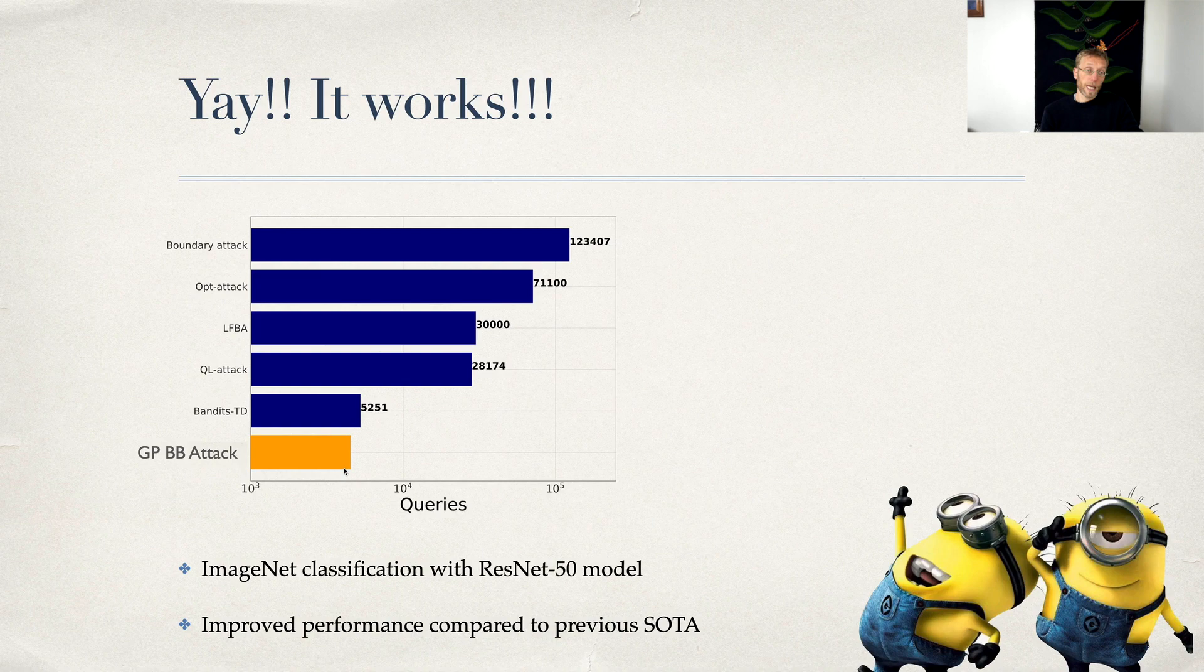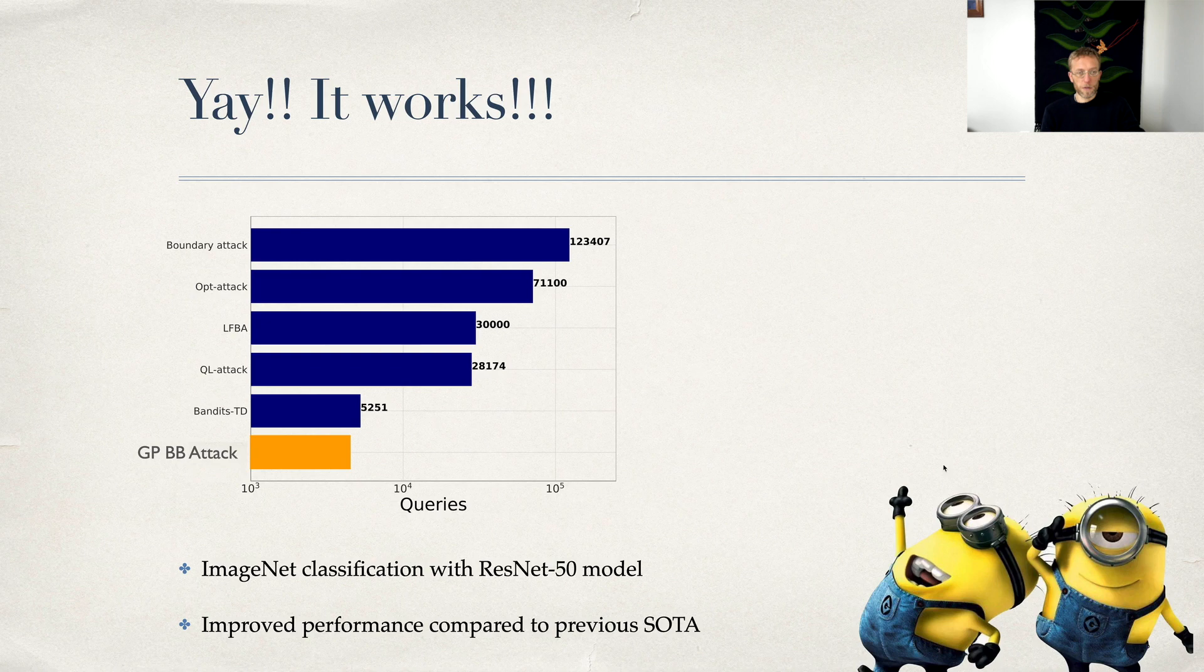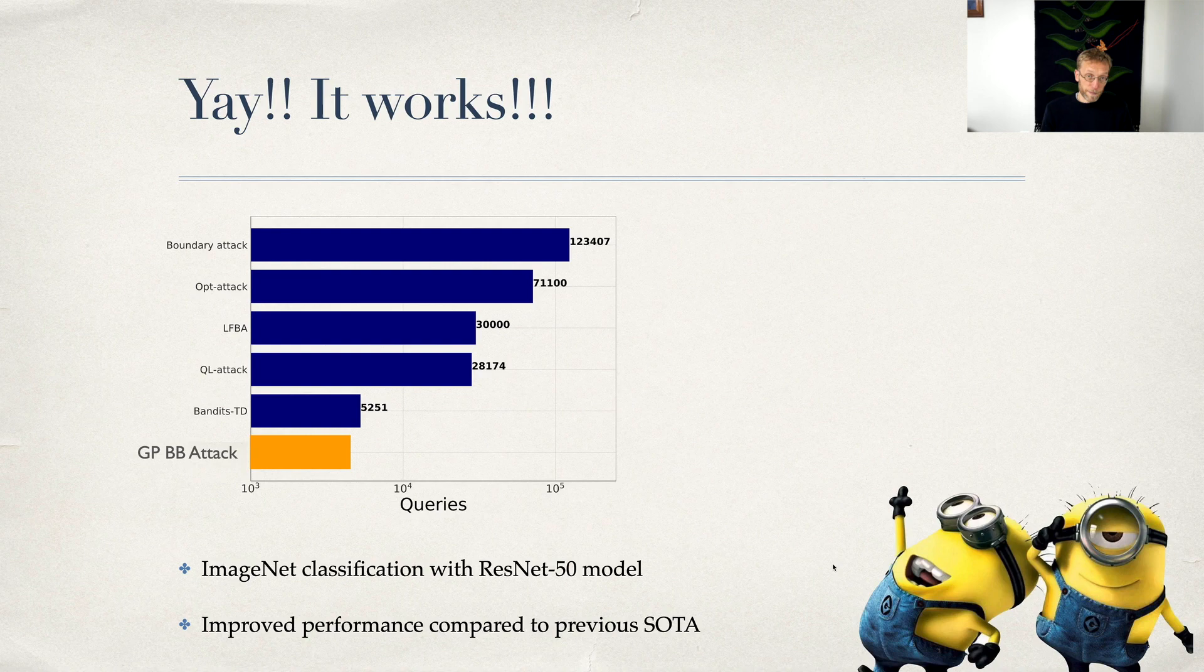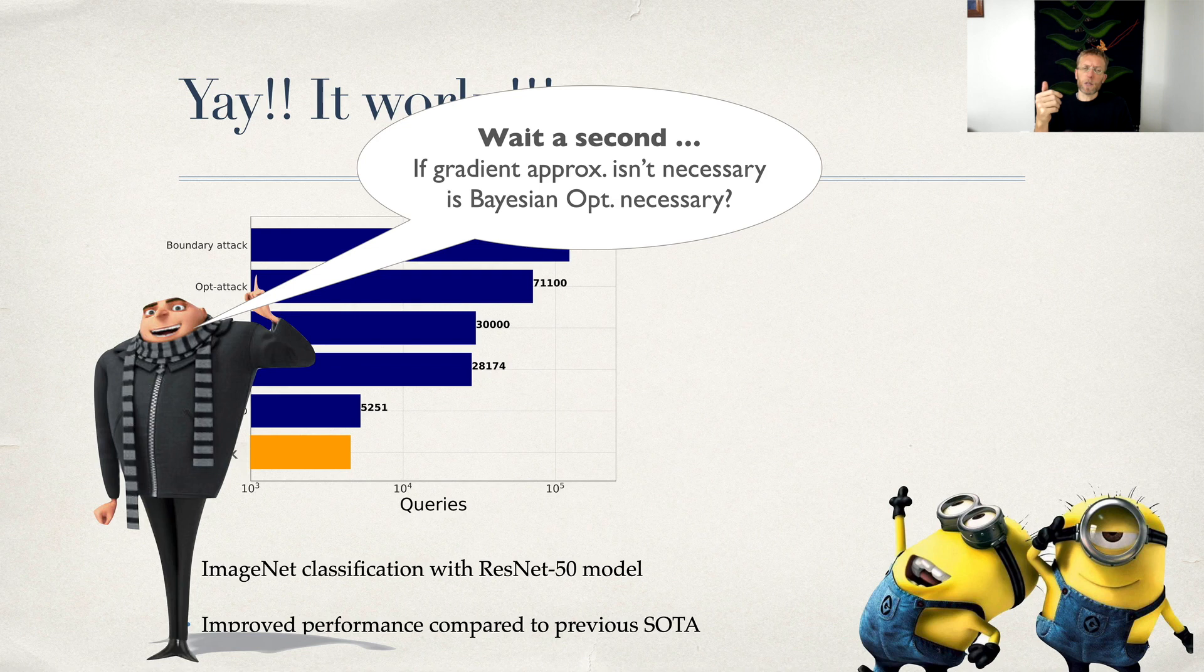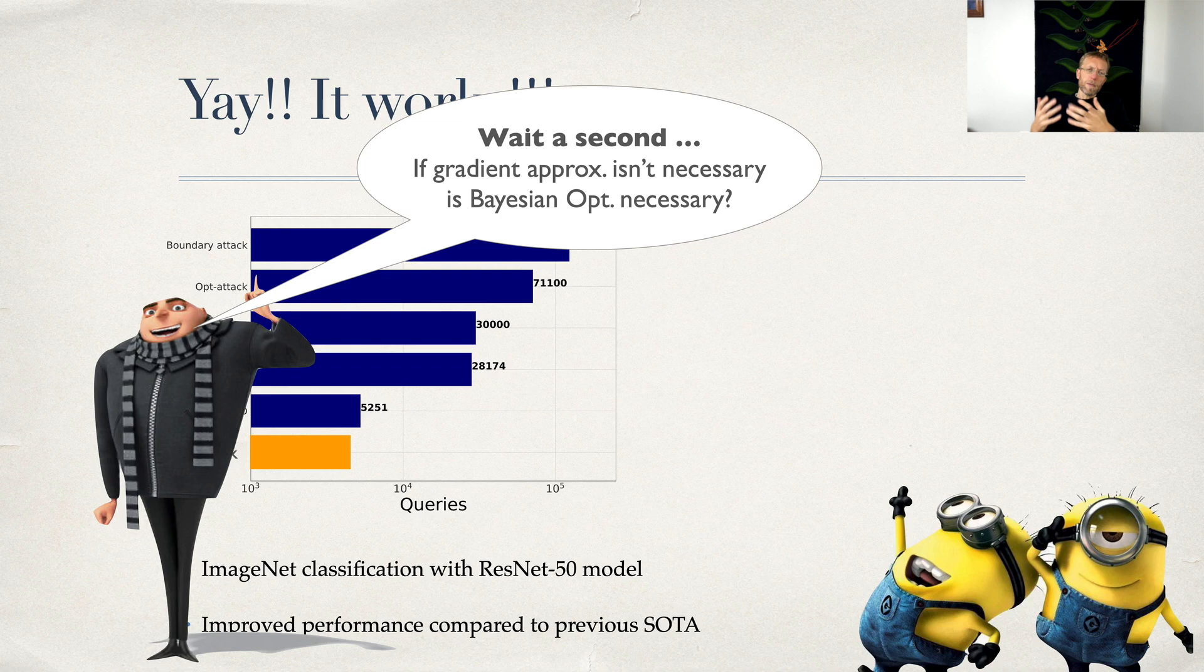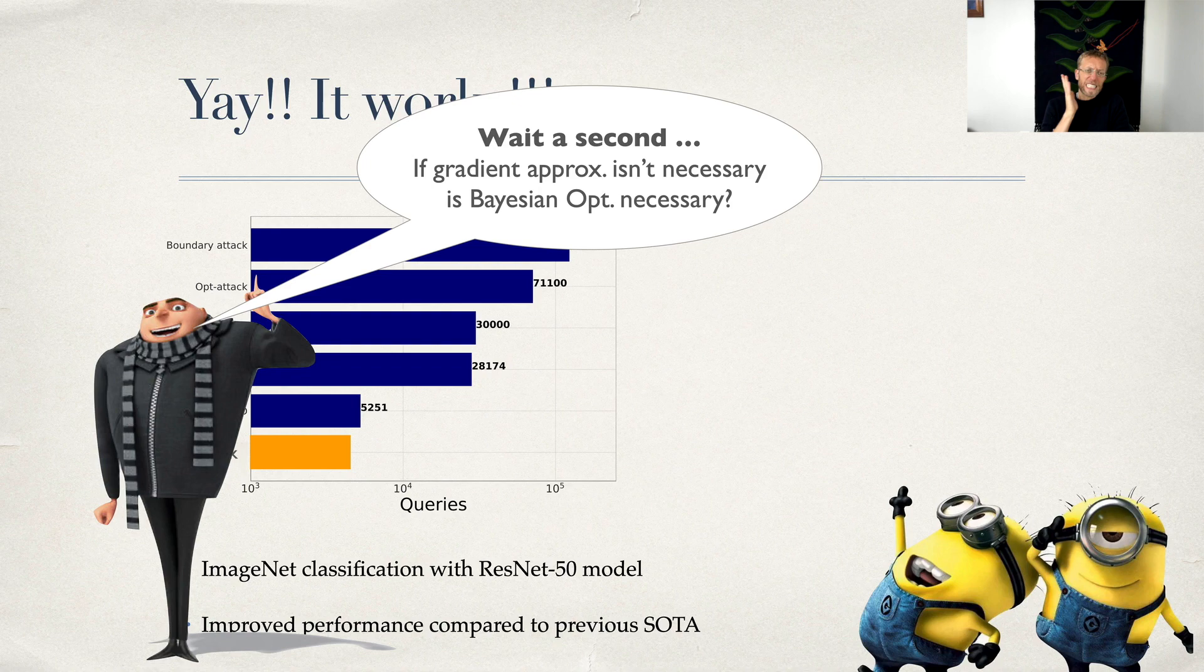It worked like a charm. First try, it worked beautifully. We needed fewer queries than state of the art, my students were super excited. We have beautiful math, Gaussian process, exploration-exploitation trade-off, and great numbers. But then we thought, wait a second. Previously people approximated gradients, but you don't actually need the gradients. Now we use Bayesian optimization, but maybe you don't need that either. What's the simplest baseline possible?